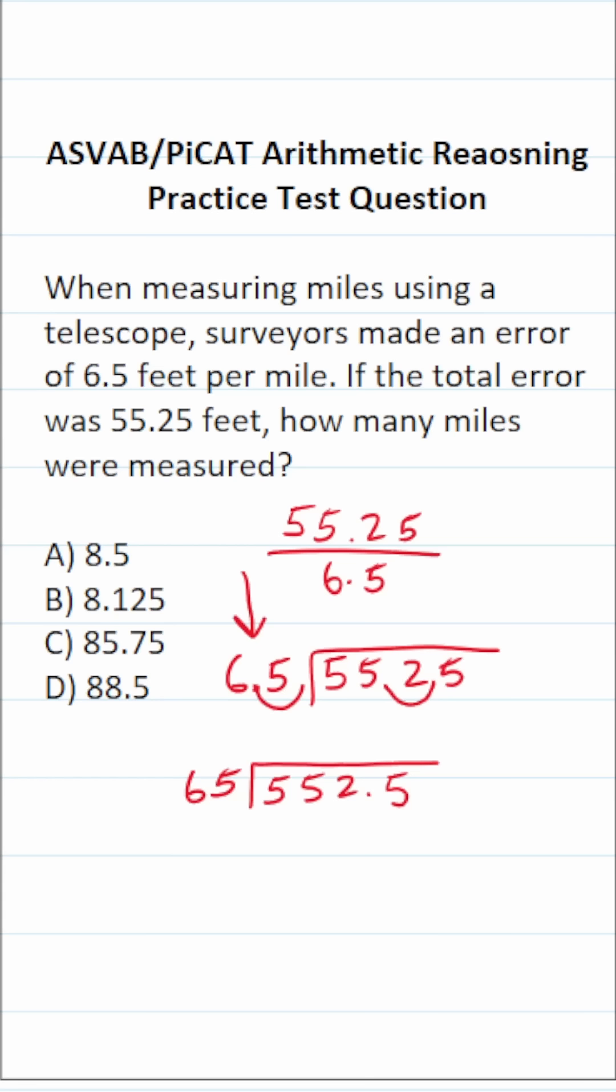Let's think about it this way: 6 times 8 would be 48, 6 times 9 would be 54. So I'm going to say 65 goes into 552 a maximum number of 8 times.